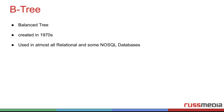Now let's look at the one you probably all are using — B trees. These are balanced trees, they were created already in the 1970s, and are used in almost all relational and some NoSQL databases. For example, InnoDB is based on it. This is probably the most well-known of all.